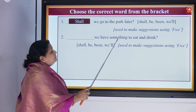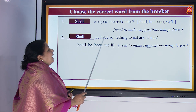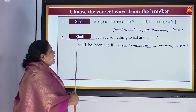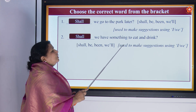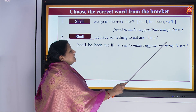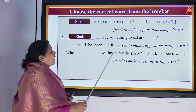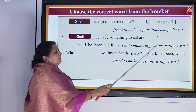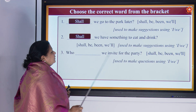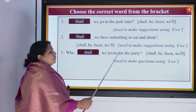'Dash, we have something to eat and drink?' — 'Shall we have something to eat and drink?' This is also a question, so 'shall' comes at the front. Used when making suggestions with 'I' and 'we'. Next: 'Who dash we invite for the party?' — 'Who shall we invite for the party?' This is also a question form using 'I' and 'we'.